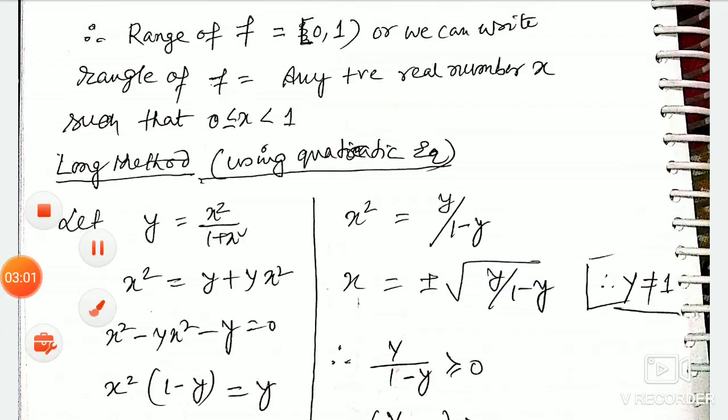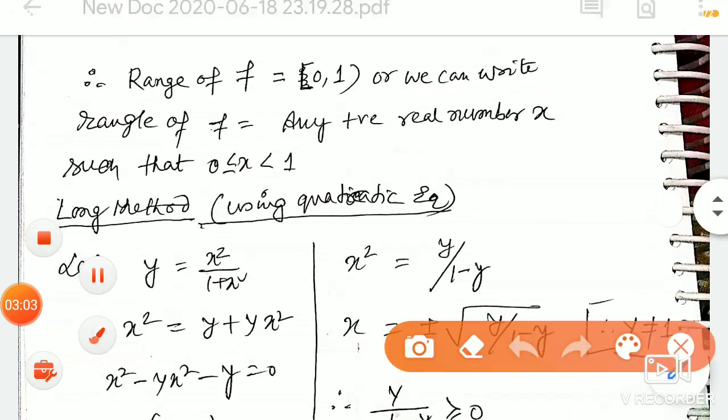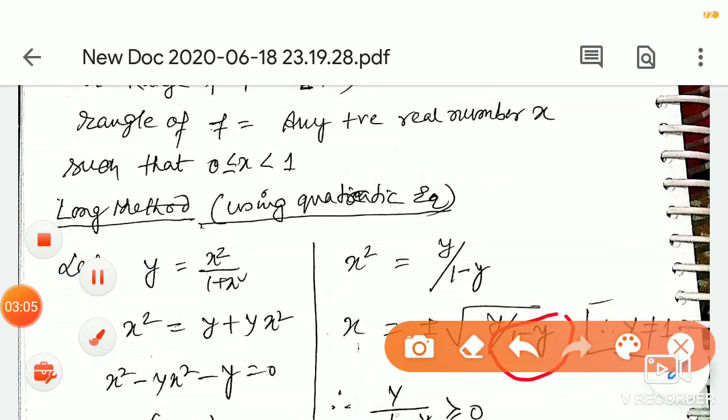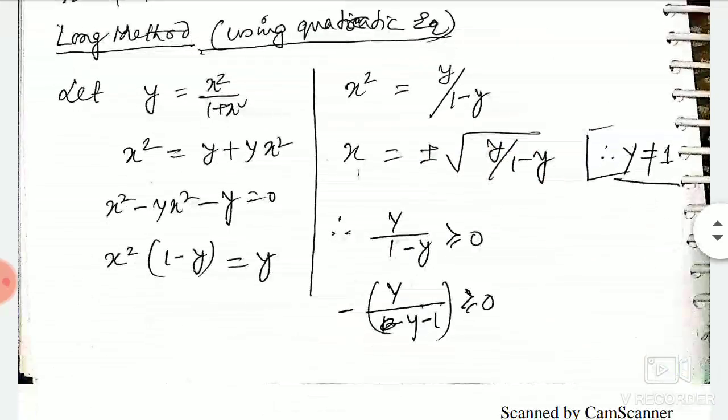Because if it becomes 1, what will happen? The denominator will become 0 and then what will happen? It is not defined. Now y/(1-y) ≥ 0. Minus common taken out.